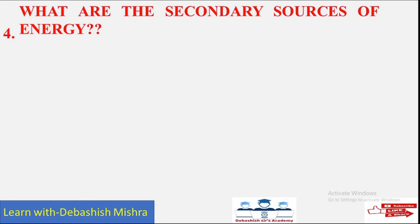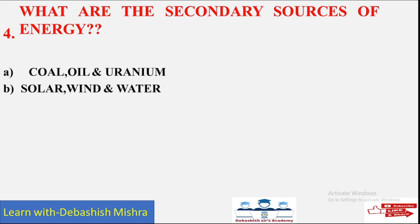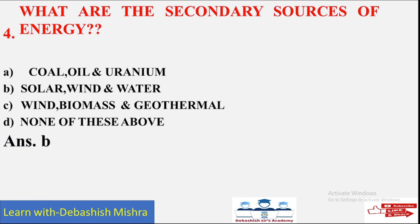Question number four: What are the secondary sources of energy? Options are: A) Coal, oil and uranium; B) Solar, wind and water; C) Wind, biomass and geothermal; D) None of these. Option B is the correct answer — solar, wind and water are the secondary sources of energy. Very, very important.